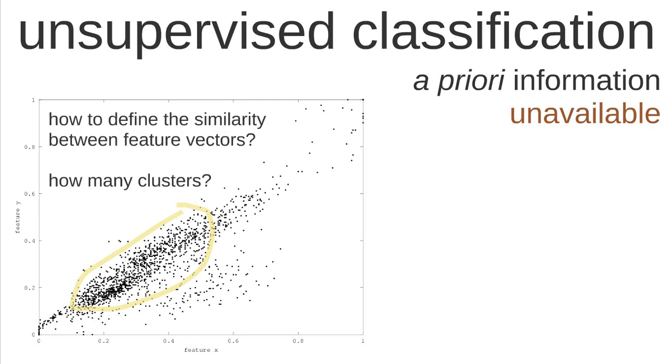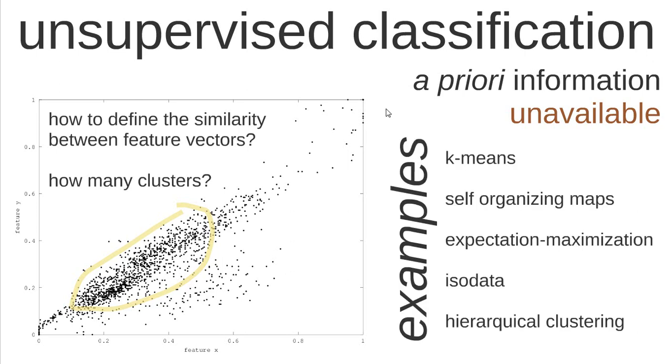How to define the similarity between feature vectors? Sometimes when we use unsupervised classification, we have to provide this information: how many clusters do we expect to find in this group of data? Examples of these algorithms include k-means, self-organizing maps, expectation-maximization, isodata, and hierarchical clustering. This letter k stands for how many clusters we expect to find.